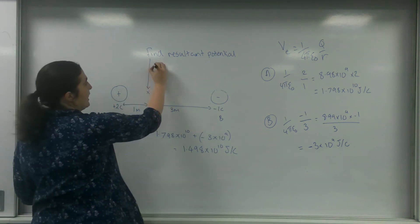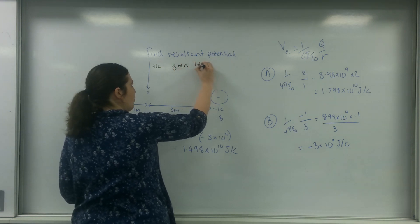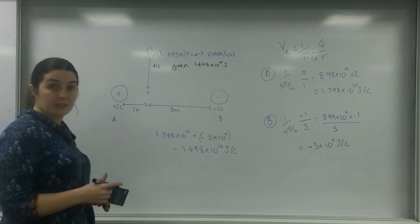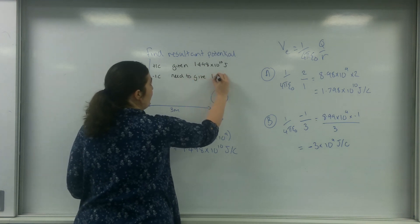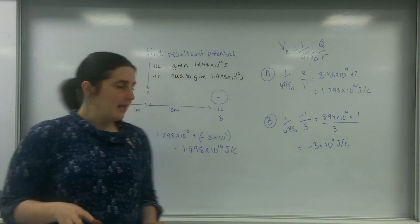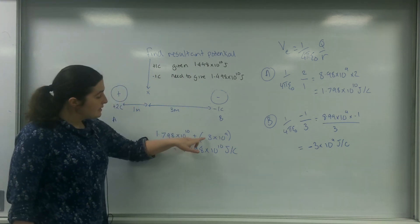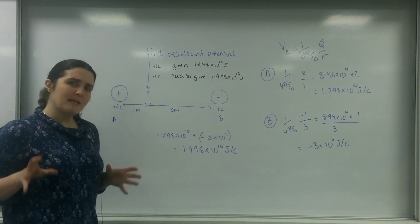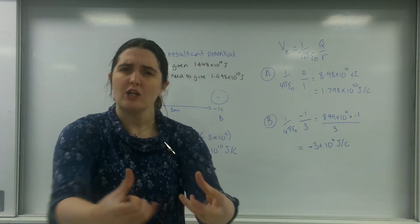So this means at this point, if I had a positive 1 coulomb charge, I would be given 1.498 × 10¹⁰ joules to leave the field — because my potential is positive and my charge is positive. If I had a minus 1 coulomb charge, I would need to give 1.498 × 10¹⁰ joules to leave the field. If this charge were replaced with a positive charge, the potential would also be positive and I'd get a big number, about 2 × 10¹⁰, because both fields would be acting in the same direction — both repelling or both attracting the object.